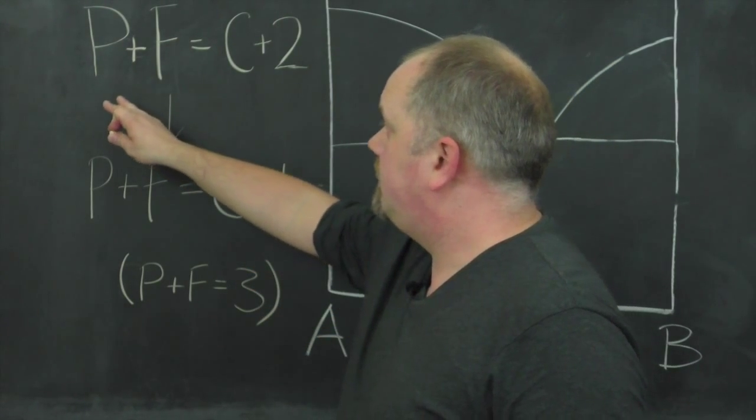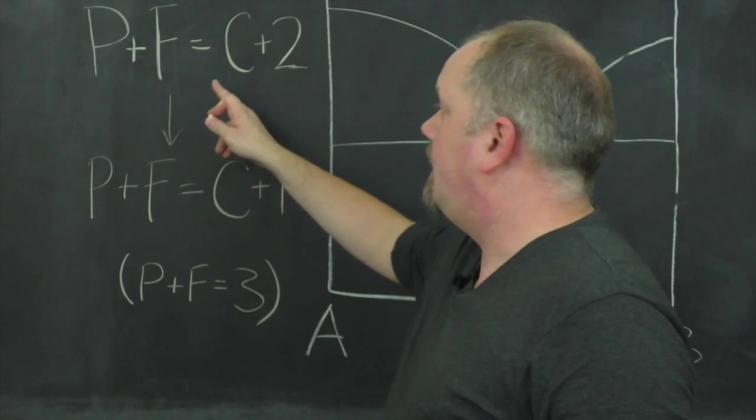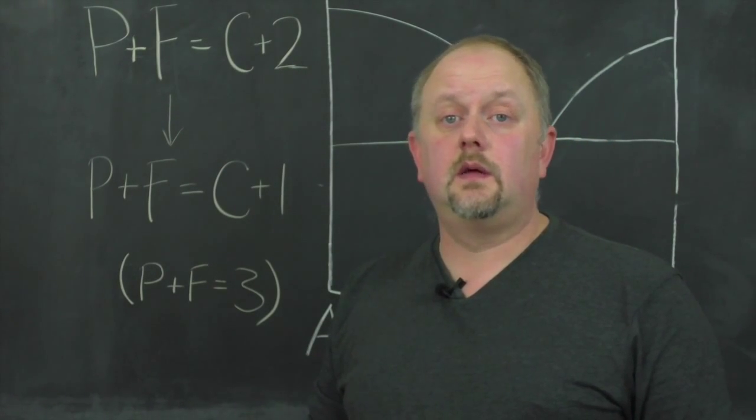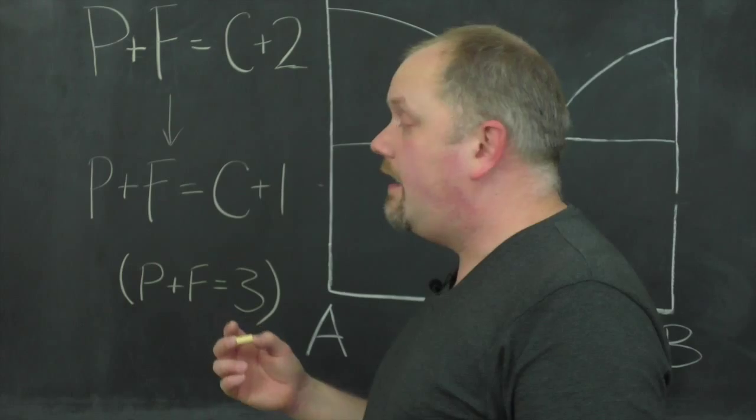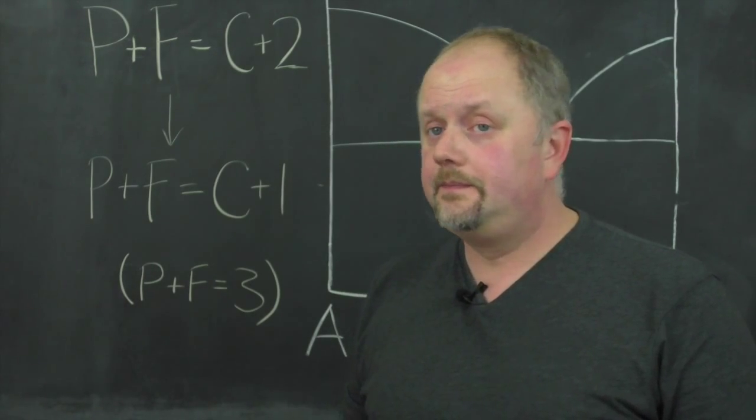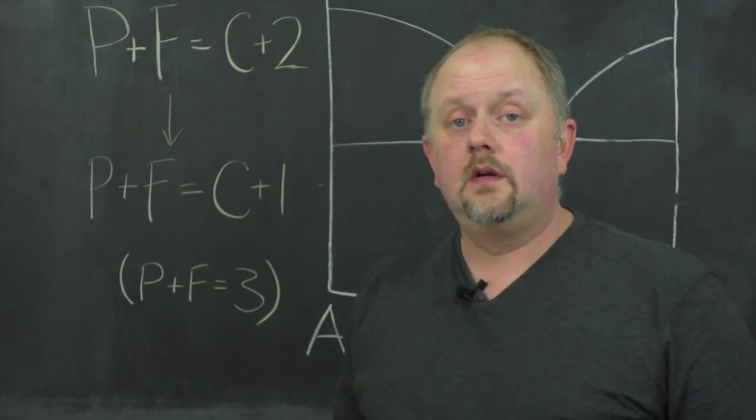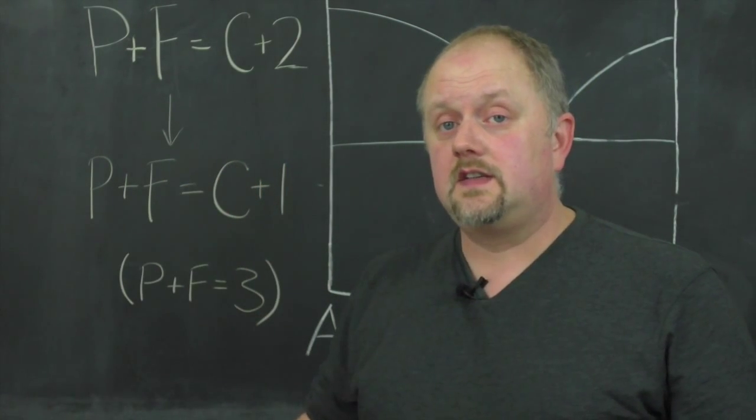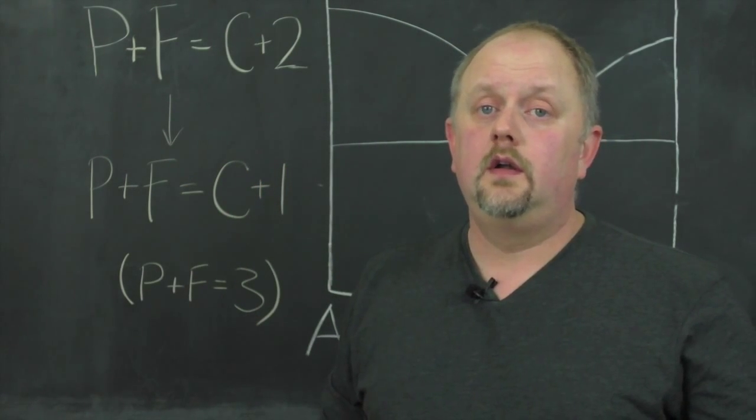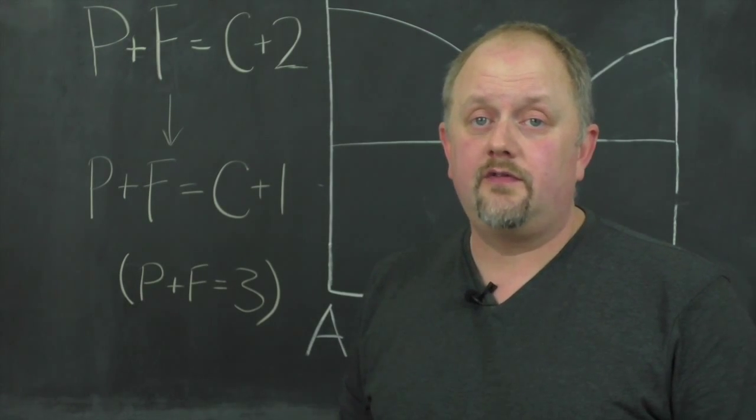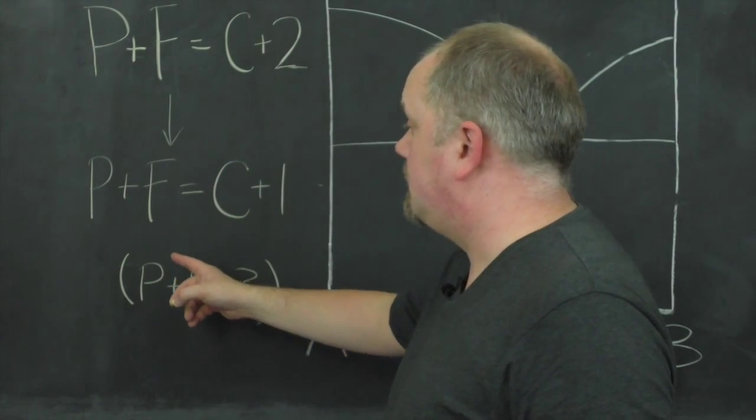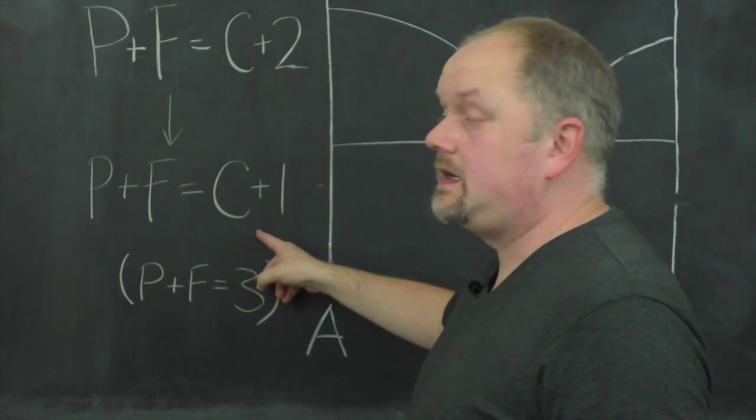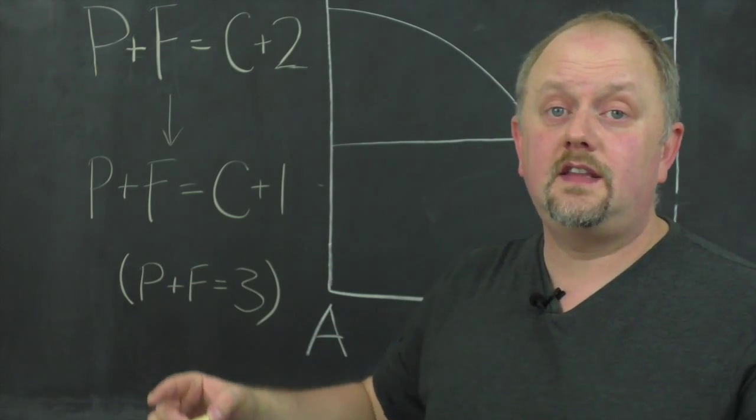So the phase rule can be written P plus F equals C plus 2. So P is the number of phases, F is the number of degrees of freedom, and C is the number of components. Now for solid state systems we can generally ignore any significant vapor phase. So we can simplify this down so that P plus F equals C plus 1. This is what we call the condensed phase rule.